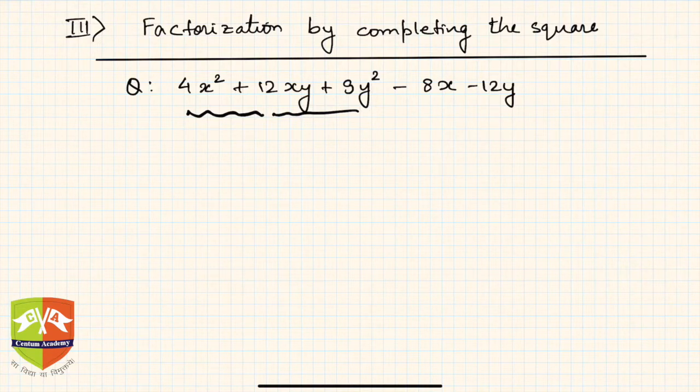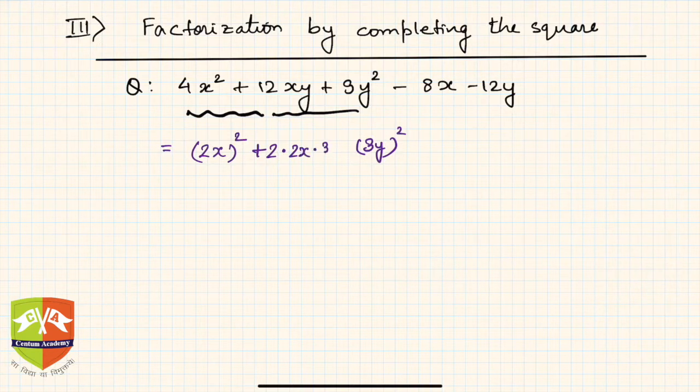Let us try and do it in a more detailed way. If you see, 4x² + 12xy + 9y² is nothing but (2x)² + (3y)² + 2 times 2x times 3y. So if you see, 12 can be written as 2 × 2x × 3y.